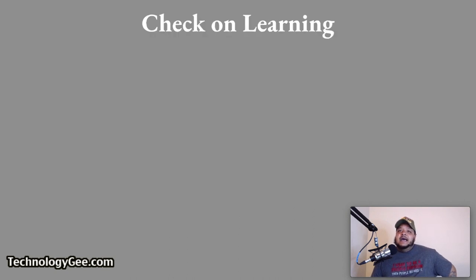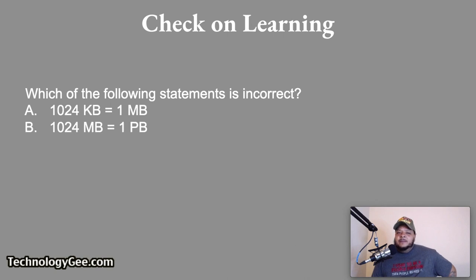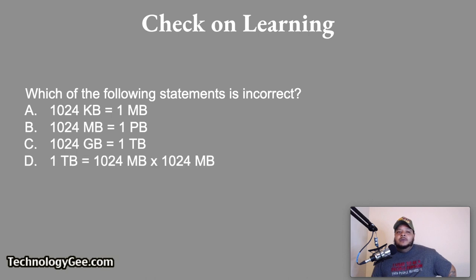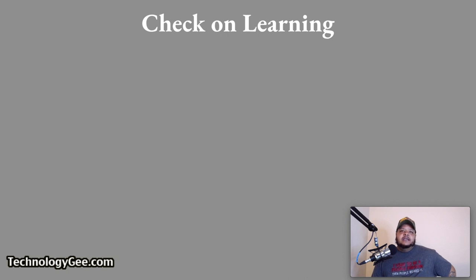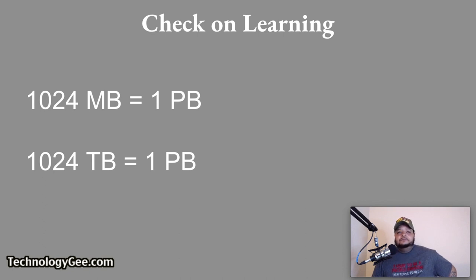Let's get into some check-on-learning. First question: which of the following statements is incorrect? Is it 1,024 kilobytes equals 1 megabyte; 1,024 megabytes equals 1 petabyte; 1,024 gigabytes equals 1 terabyte; or 1,024 megabytes times 1,024 megabytes? The answer is: 1,024 megabytes does not equal 1 petabyte. The correct statement is 1,024 terabytes equals 1 petabyte.